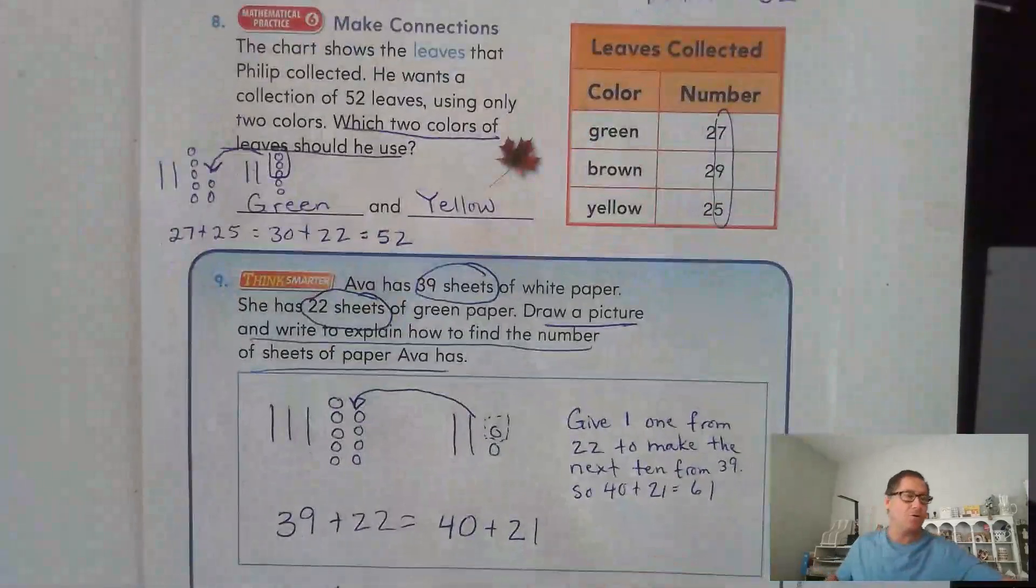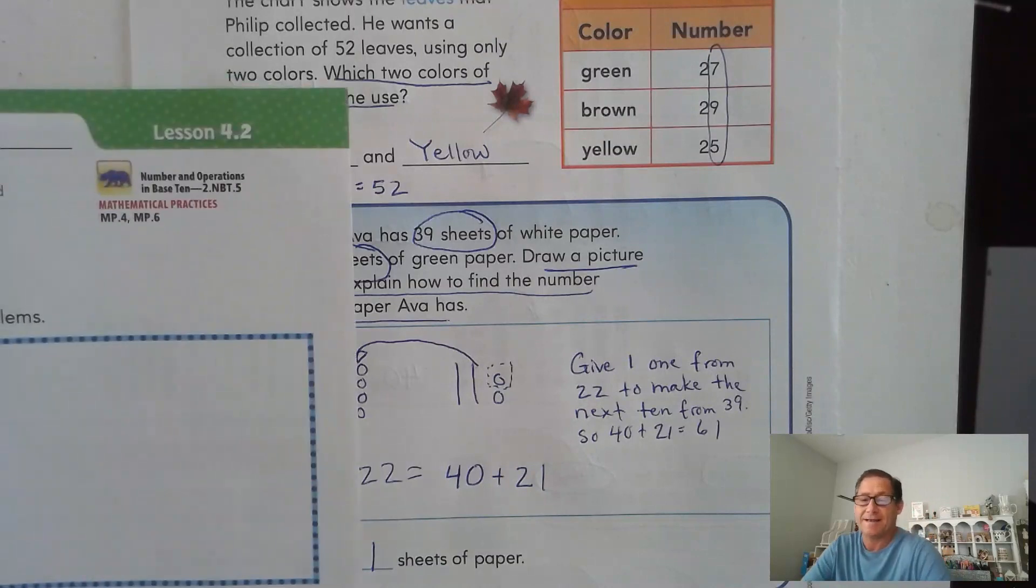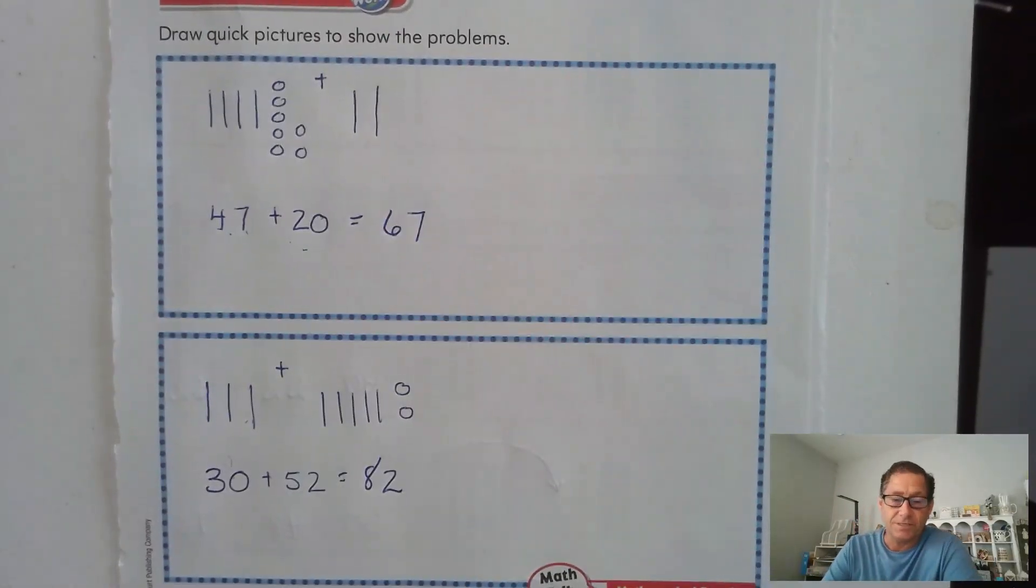Alright. So that's the idea of compensation where we use one of the addend's ones to make the next 10 from the other addend. So until our next lesson, I will see you soon.